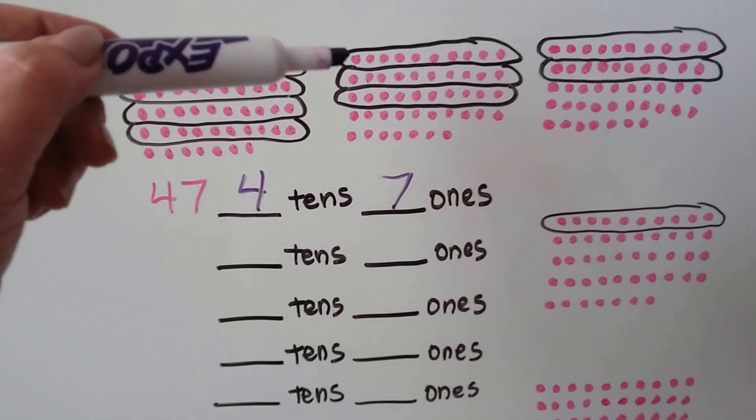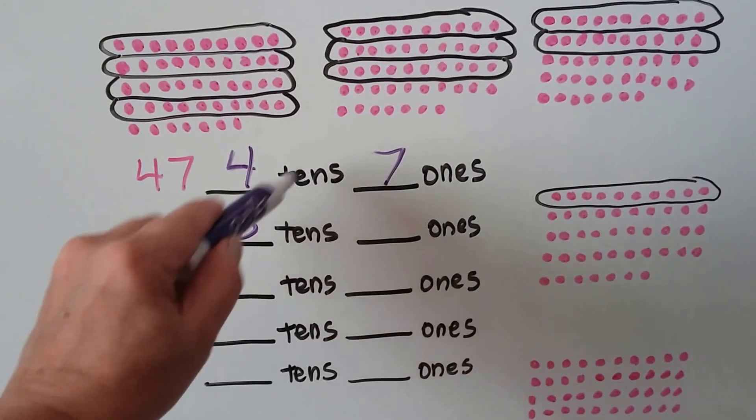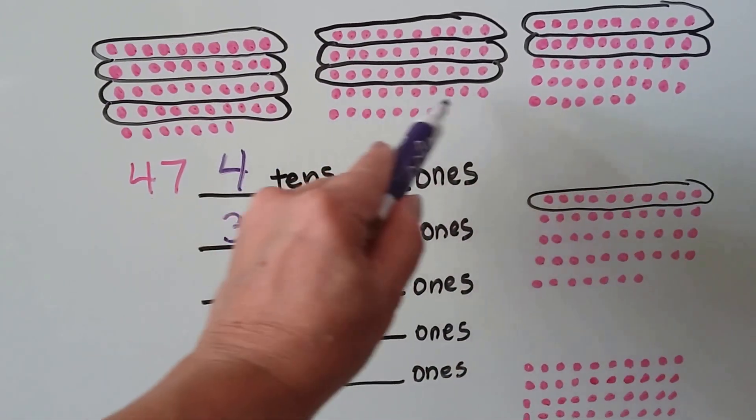We can also regroup it as 1, 2, 3 tens and 17 ones.